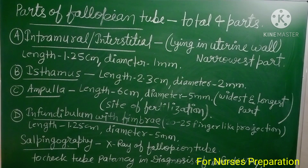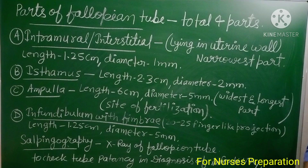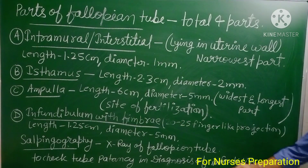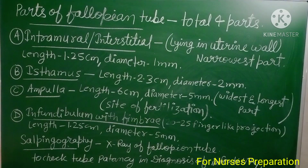Another important term asked in exams is salpingography — an X-ray of the fallopian tube. In this procedure, a contrast medium is injected into the fallopian tube and an X-ray is taken. This method is used to check for any blockage and is mainly done to diagnose infertility.